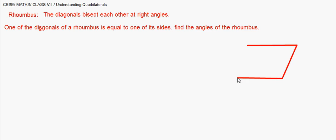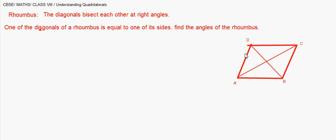The figure may not be perfectly accurate, but I'm using it to represent a rhombus where AB, BC, CD, and DA are equal sides. I join the diagonals as well. It says one of the diagonals is equal to one of its sides. Let BD be equal to one of its sides.